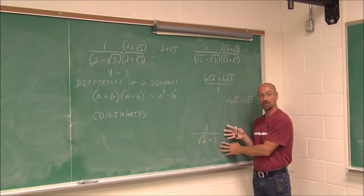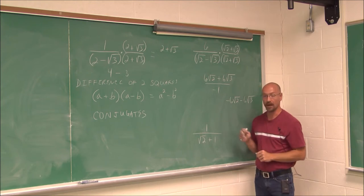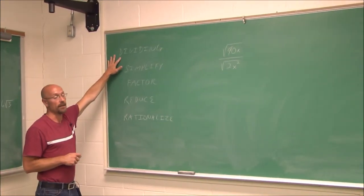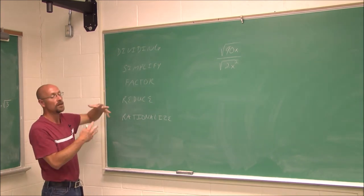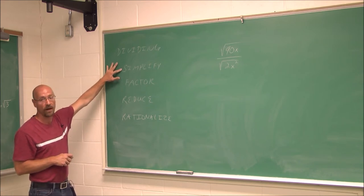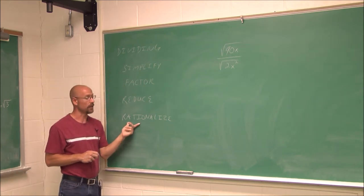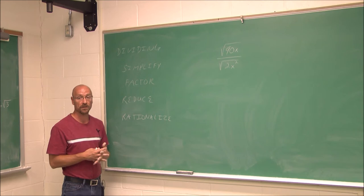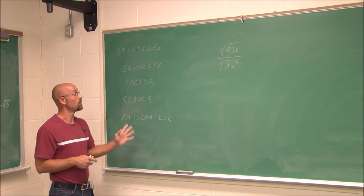I want you to try this one on your own. Multiply by the conjugate — first determine the conjugate, then multiply the denominator and numerator by that value, and simplify. Now let's talk about dividing again. Dividing is essentially simplifying a radical that might be in the denominator, the numerator, or both. What we want to do is simplify, factor, reduce it, and then rationalize our denominator. Sometimes we'll actually be asked to rationalize a numerator — that can come up in calculus applications.